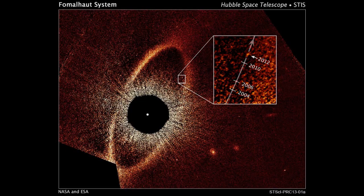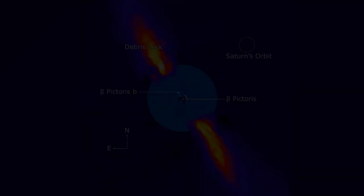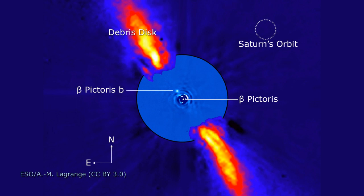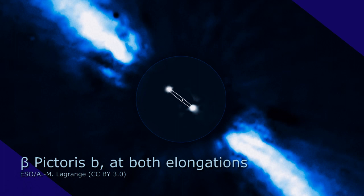A planet orbiting Beta Pictoris was also confirmed in 2009. It has a much shorter orbital period of 15 to 20 years, the shortest of any directly observed exoplanet so far. It will be possible, within a human lifespan, to observe several orbits. It has already been observed on opposite sides of its host star.